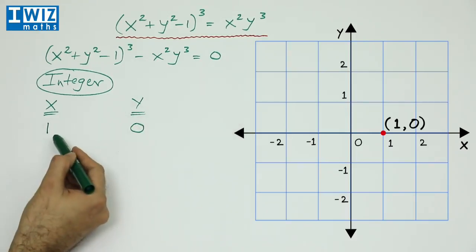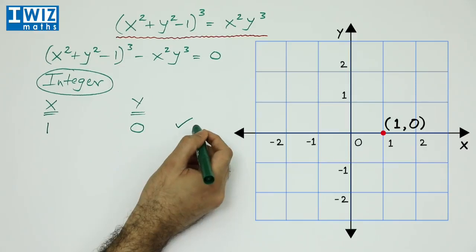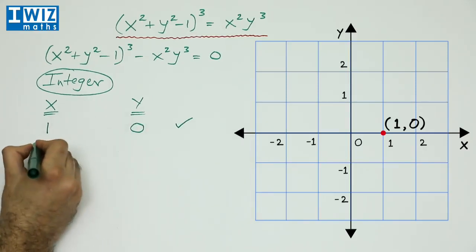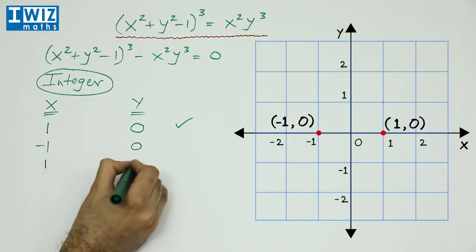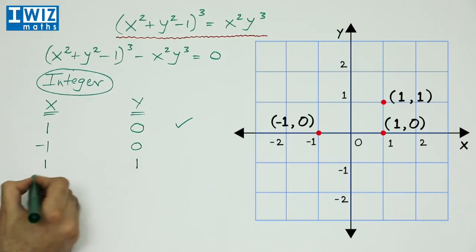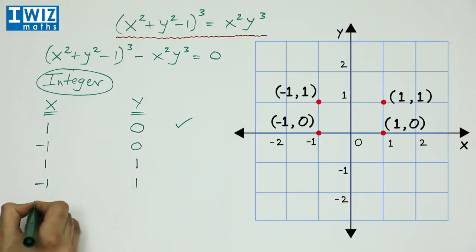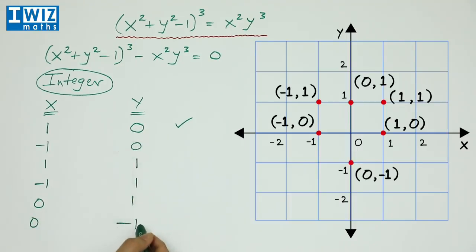Now in a similar manner, we can actually find other integer solutions. So we can verify that minus one and zero is also a solution. One and one is also a solution. Minus one and one is a solution. Zero, one, zero, minus one are all solutions.